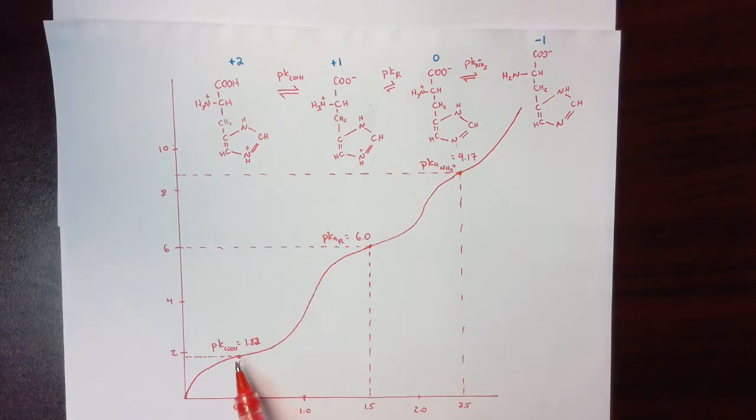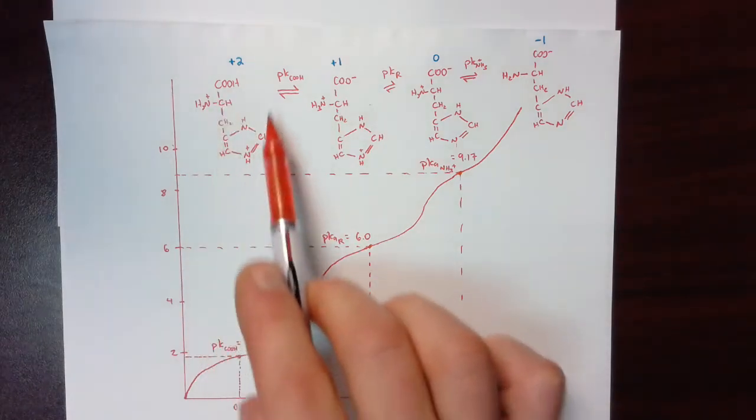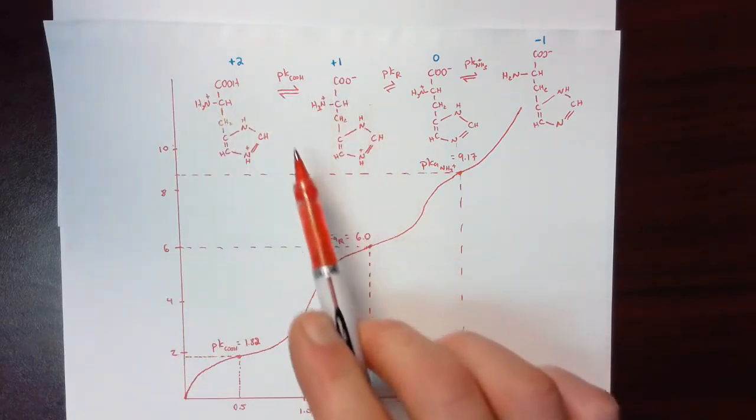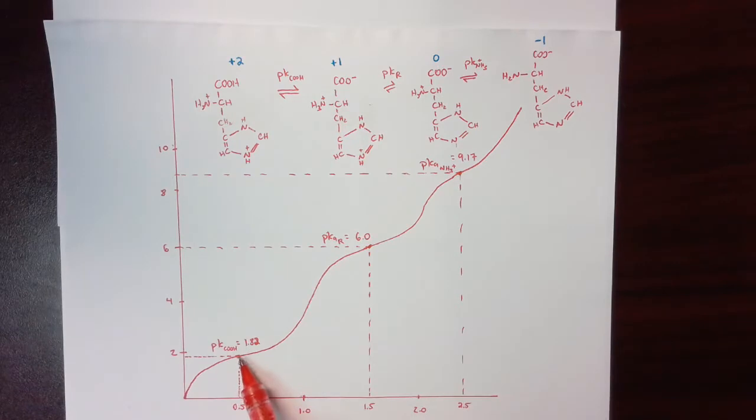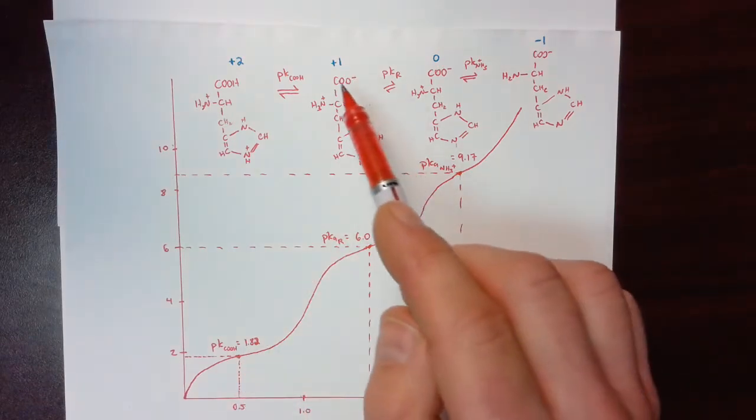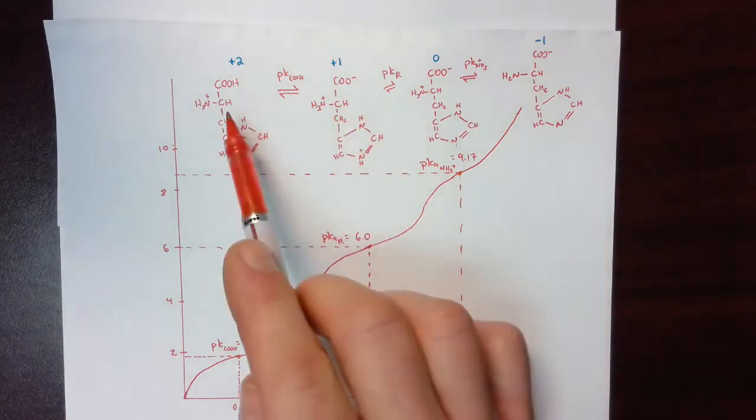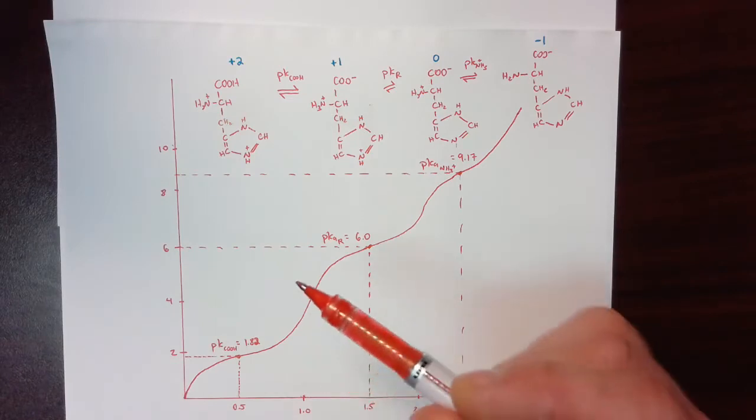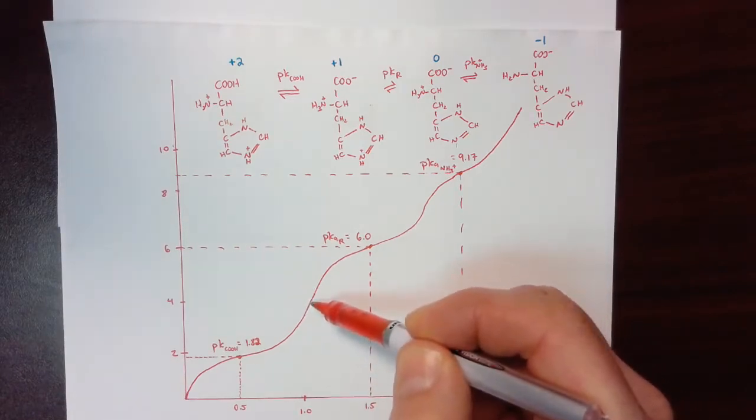As OH is continually added, more and more of this form disappears and becomes this form. So anywhere at pH above the pKa we would say there is more of the basic form if we're looking at these two here. And then continuing on all the way until the first equivalence point.